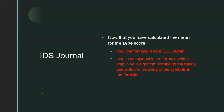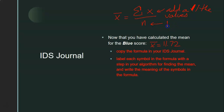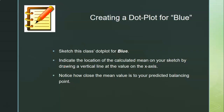Now that you have your calculated mean for the blue score — x-bar equals 11.72 — I want you to copy the formula into your IDS journal. The formula is: x-bar equals the summation of all your x-values divided by n, which is the number of values you have. Copy down that formula and label each symbol with a step in your algorithm for finding the mean and write the meaning of the symbols in the formula.